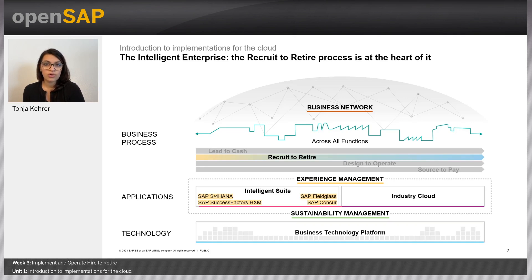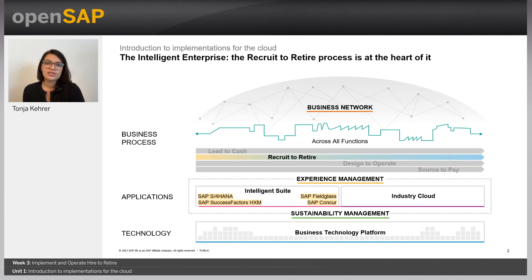There are four core end-to-end processes that are part of every enterprise in any industry: Lead to Cash, Recruit to Retire, Design to Operate, and Source to Pay. All four processes bring value to the intelligent enterprise as they accelerate innovation and reduce the complexity of operations. It is the Recruit to Retire process that defines human experience management, powered by the applications highlighted in gold on the slide.